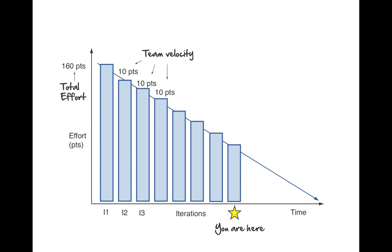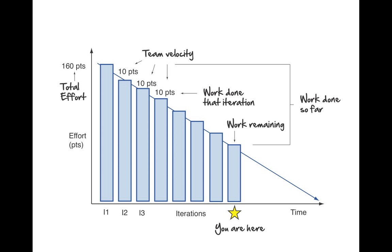We can see the total effort on the left, our team velocity on the right. But look at what else this great graph can give us: it shows work done each iteration, work remaining, work done so far, and when we can expect it to be done — all of this from one graph.